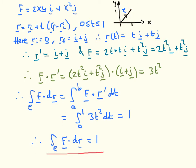At t=0, we have the initial position; when t=1, we are left with the final position. So we start at the origin and finish at the point i plus j. Thus r(t) = t·i + t·j. The derivative of this position vector with respect to t is i + j.